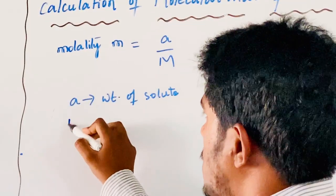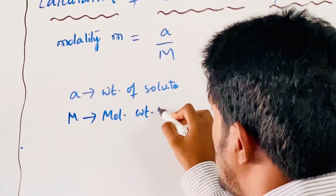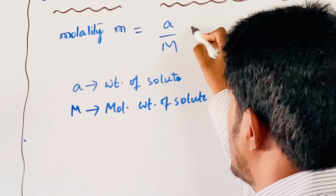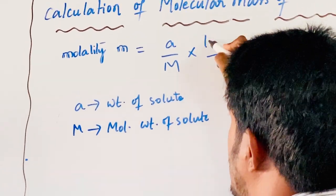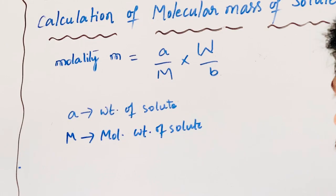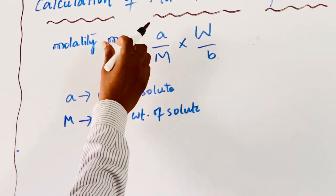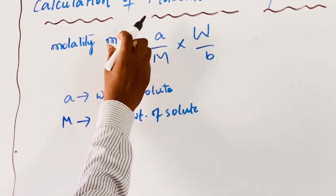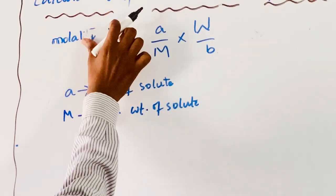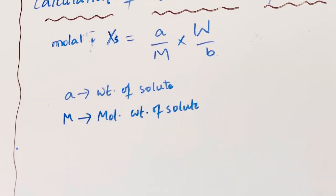W represents molecular weight of solvent. From this, chi-s (mole fraction of solute) equals A by M into W by B, where B represents weight of solvent.